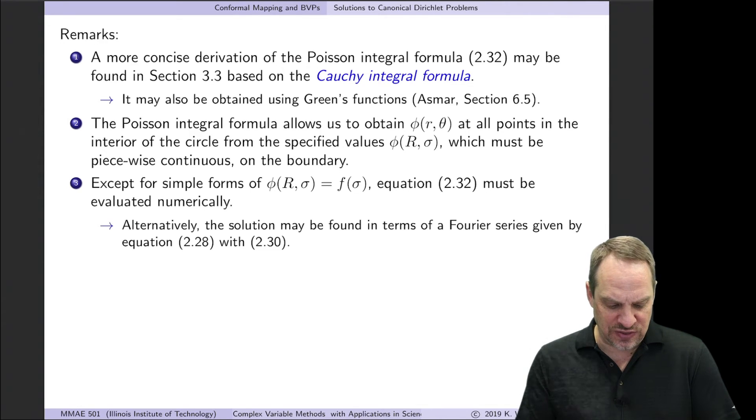There's a couple other ways to get these. One is through the Cauchy integral formula, which we haven't covered yet, so I haven't done it that way. It's a much more concise, much more direct way to get it. You can also get the Poisson integral formula using Green's functions.